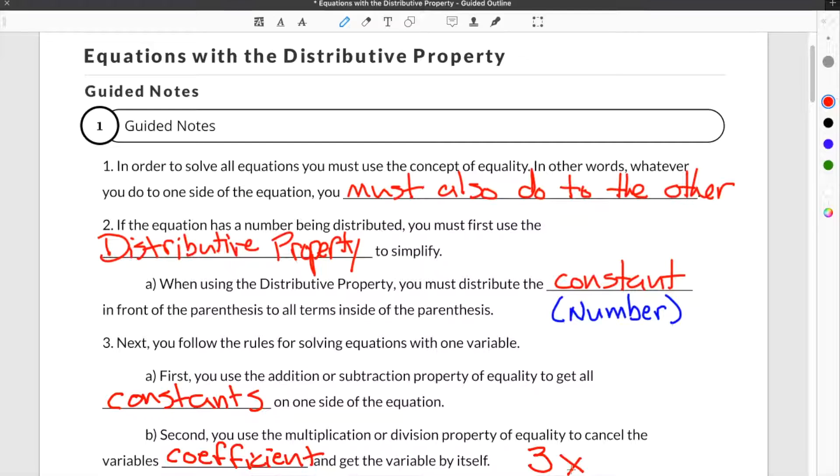And when we're talking about coefficients, what we're talking about is the number that is attached to the variable. In the case of the term 3x, 3 would be the coefficient.